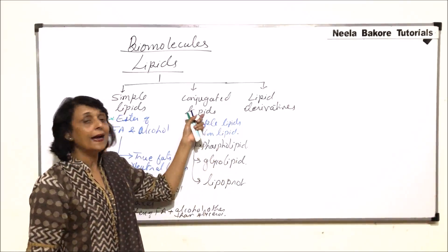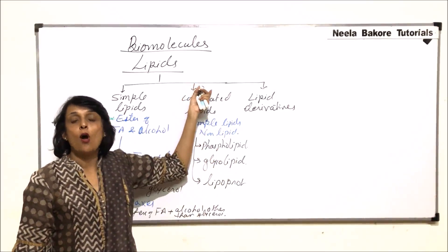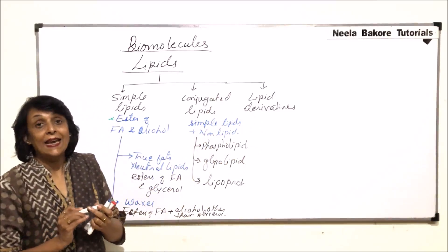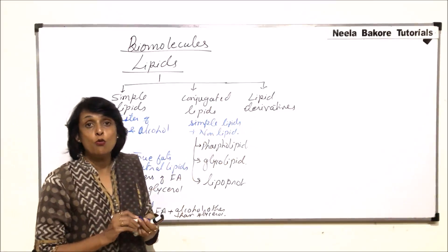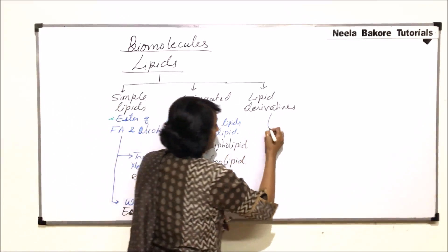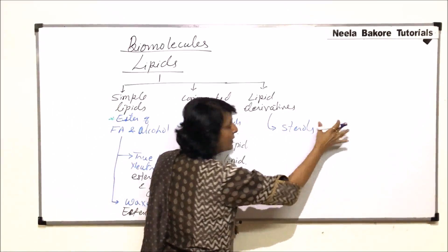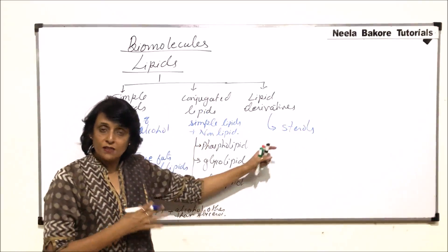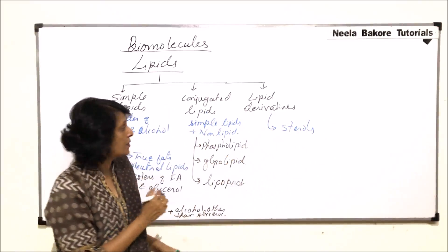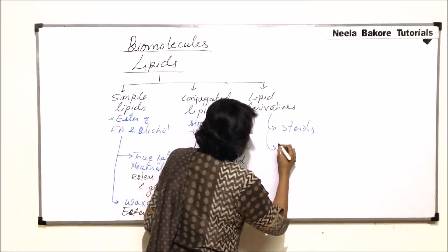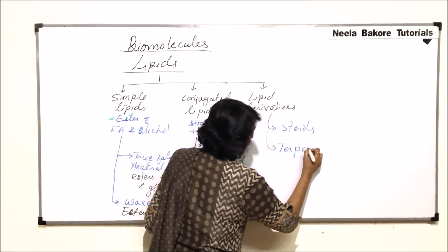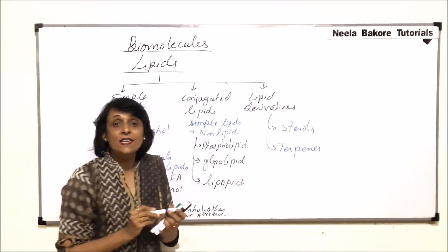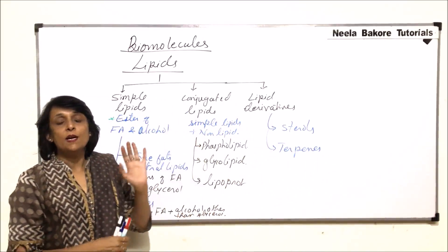Coming to the derived lipids, in this category we take two major groups: sterols, under which we discuss phytosterol and cholesterol, and the next category is terpenes. This is how we classify lipids in a brief manner.